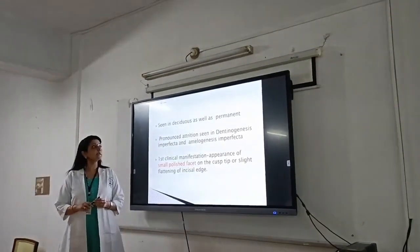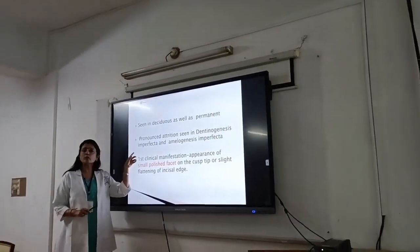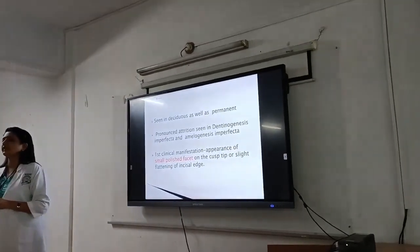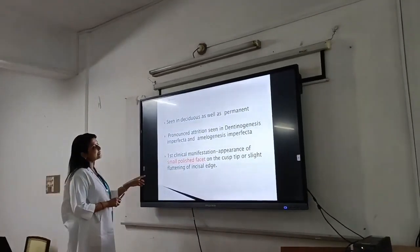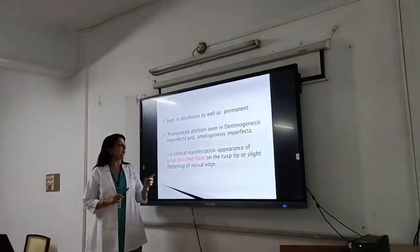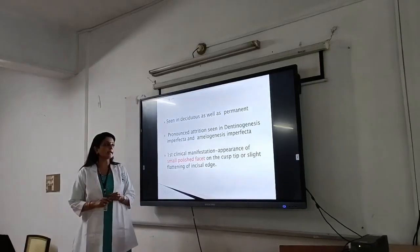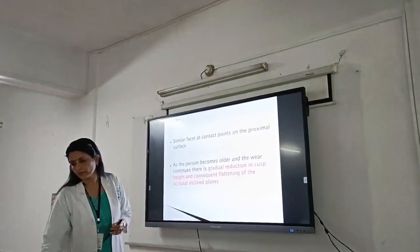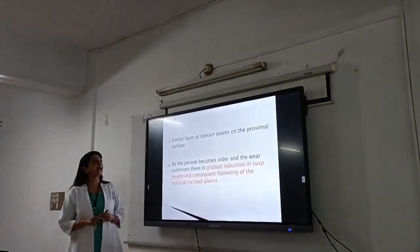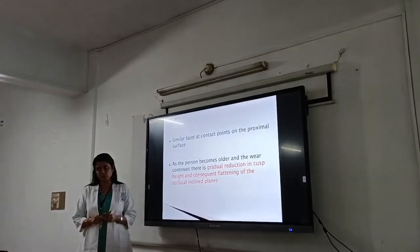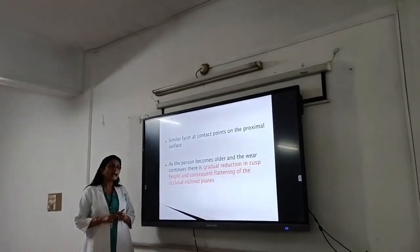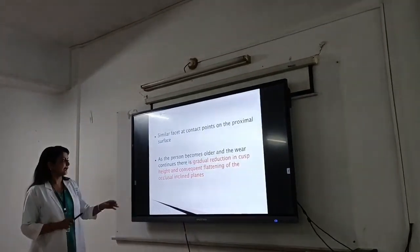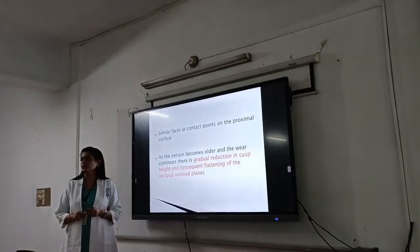Attrition is seen in both normal teeth as well as in teeth with developmental alterations where there are structural defects of dentin and enamel. The first manifestation of attrition is the appearance of a small polished facet on the cusp tip or slight flattening of the incisal edge. Similar facets are seen at the contact points on the proximal surface, also known as proximal attrition. As the person becomes older and the contact areas are reduced, there is a mesial drift and the teeth shift position.